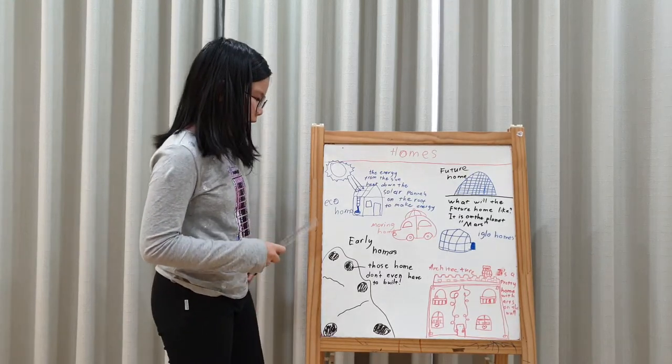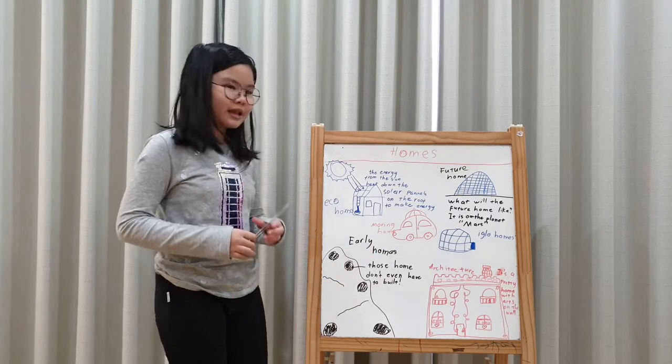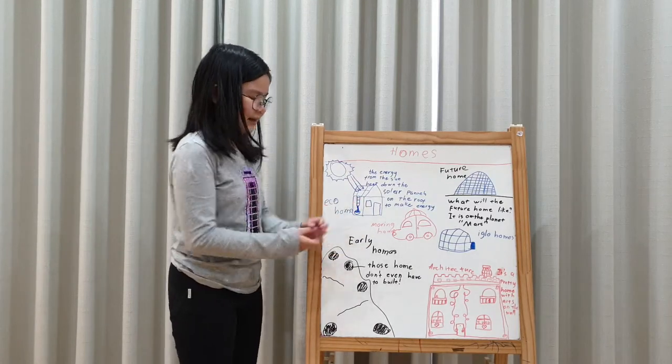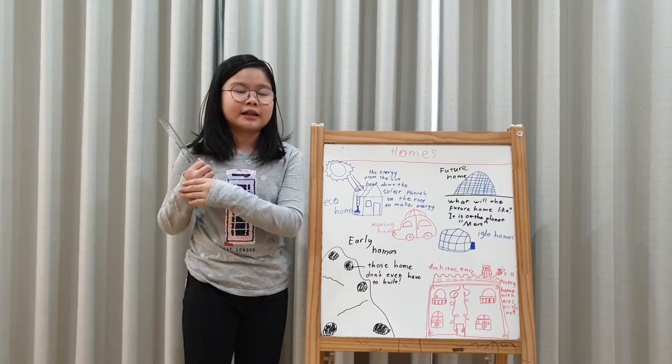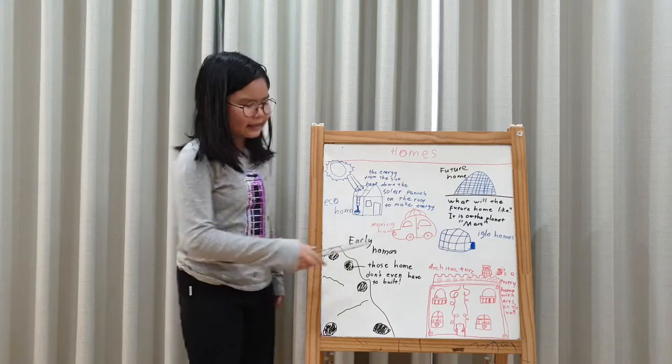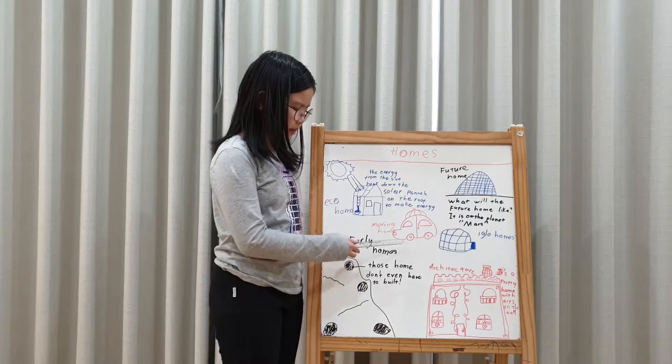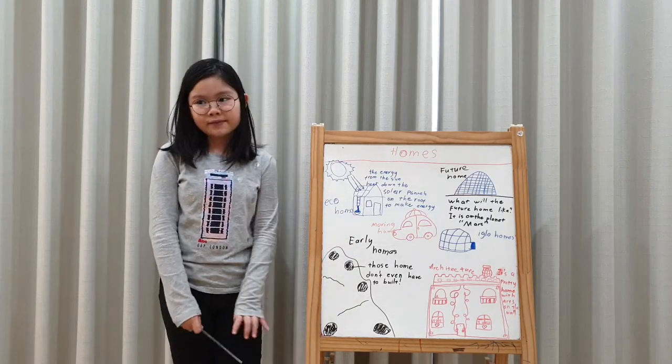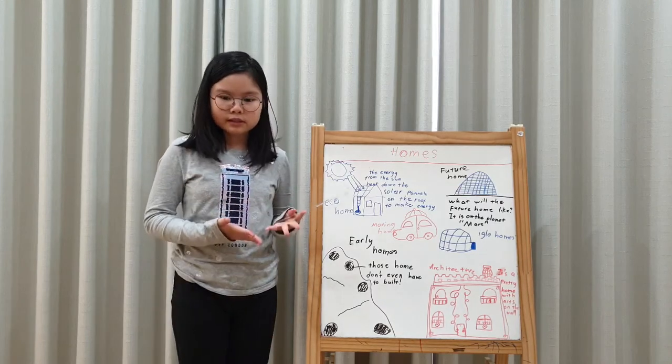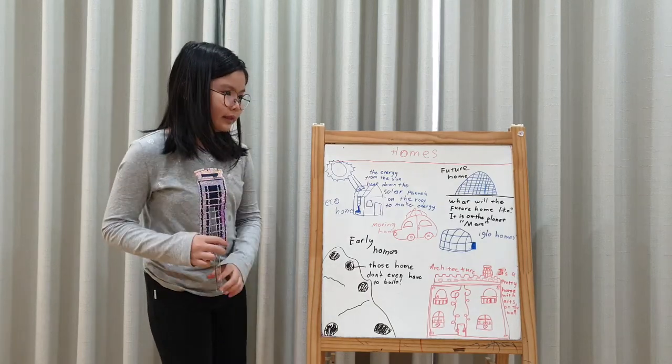The next house is moving home. Moving home? That sounds weird. This is a van. I could only draw cars. I'm not very good at drawing vans. Let's just pretend this is a van, okay? Some moving homes, we could use boats, cars, or even more kinds of vans that can move.